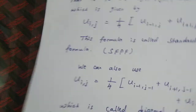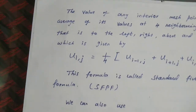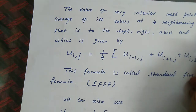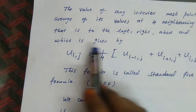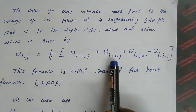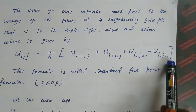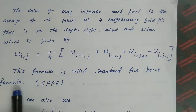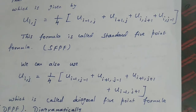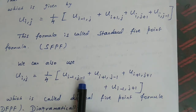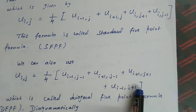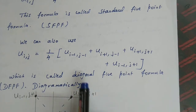The value of any interior mesh point is the average of its values at the four neighboring grid points — left, right, above, and below — given by: U(i, j) = (1/4)[U(i−1, j) + U(i+1, j) + U(i, j+1) + U(i, j−1)]. This formula is called the Standard Five Point Formula, abbreviated SFPF. We can also use the Diagonal Five Point Formula (DFPF): U(i, j) = (1/4)[U(i−1, j−1) + U(i+1, j−1) + U(i+1, j+1) + U(i−1, j+1)].